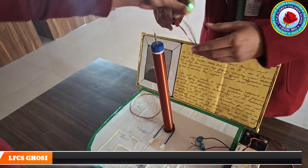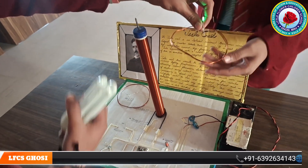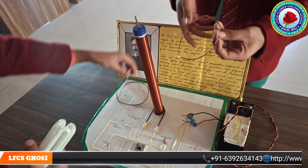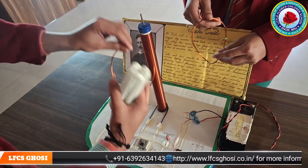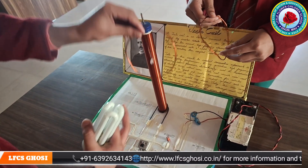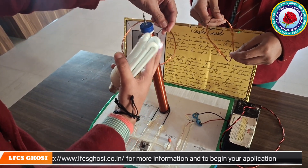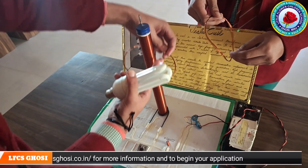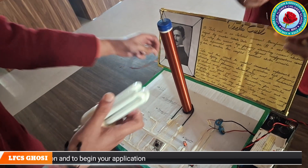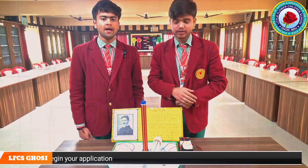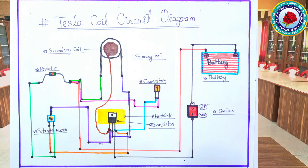Basically it works on the principle of magnetic field. The primary coil creates a magnetic field and pushes it upwards, and then the secondary coil also produces a magnetic field which ionizes its environment, and that's how the bulb starts glowing. And here we are presenting our circuit diagram.